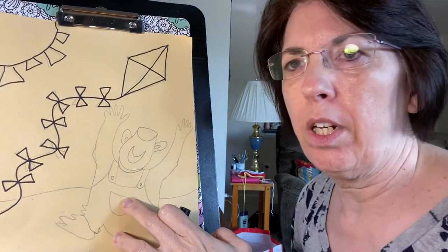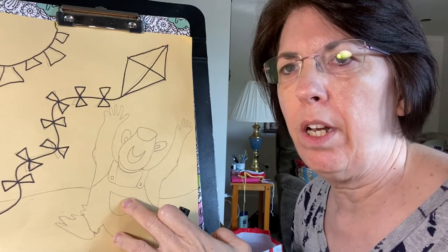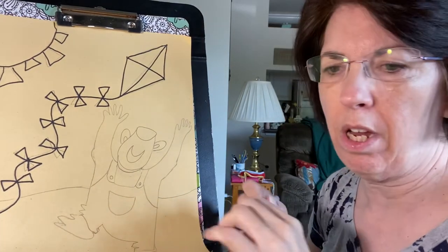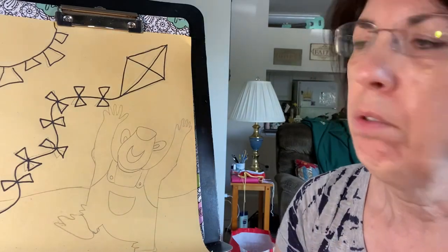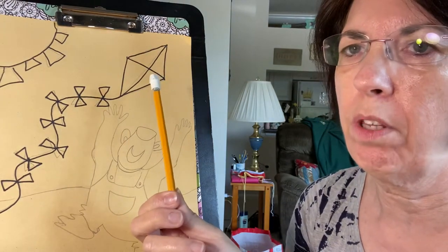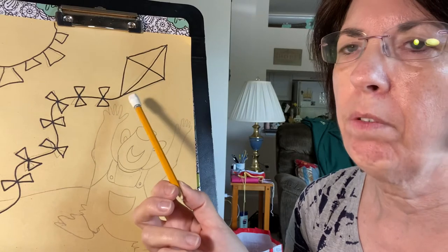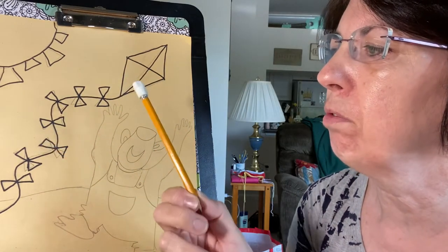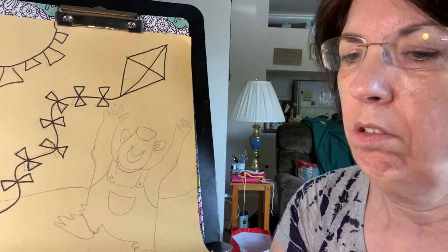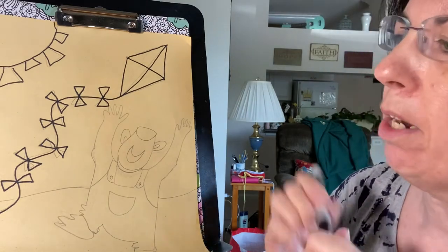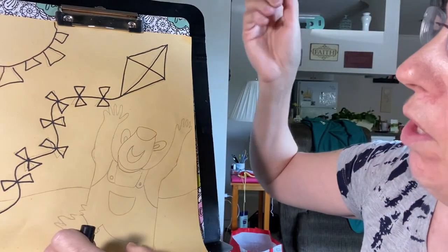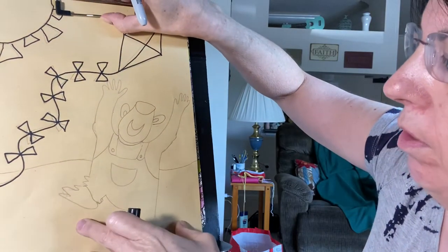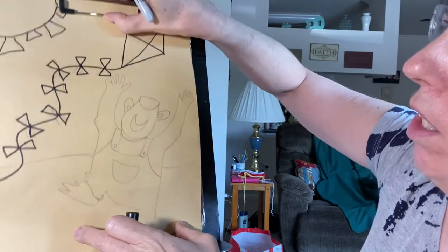So far we have the sun and the kite. Remember, you're going to use a pencil with an eraser to start with so you can erase. Then after you get it the way you want it, trace it with a black, brown, or gray crayon. Now we're going to make the bear.